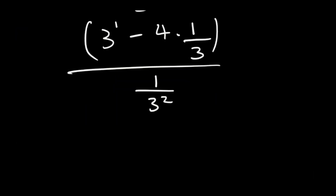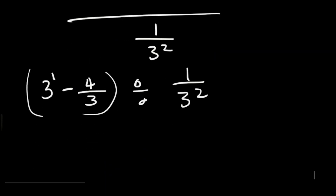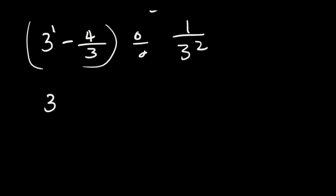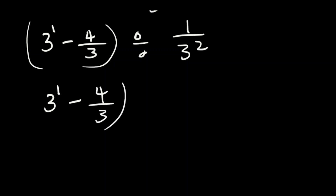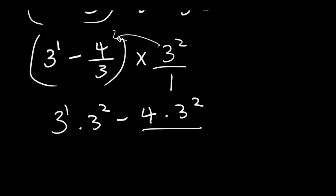From here, since it's division, we change it to multiplication by flipping — tip and multiply. So we have 3 to the power of 1 minus 4 over 3, multiplied by 3 to the power of 2 over 1. Then 3 to the power of 2 multiplies everything inside the bracket, giving us 3 to the power of 1 multiplied by 3 to the power of 2, minus 4 multiplied by 3 to the power of 2, over 3.